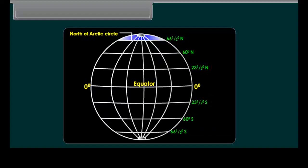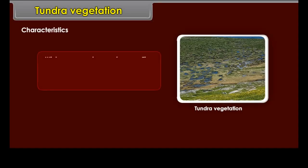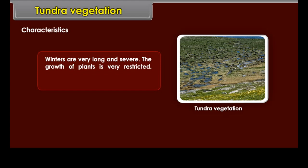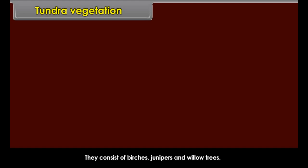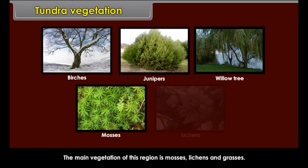Certain reptiles, lizards and snakes which live in the soil are also available here. Tundra Vegetation. This type of vegetation is found to the north of the Arctic Circle. Characteristics: winters are very long and severe. The growth of plants is very restricted. Short scattered plants and trees grow adjoining the taiga forests. They consist of birches, junipers and willow trees. The main vegetation of this region is mosses, lichens and grasses.